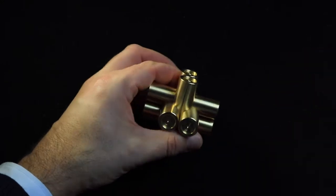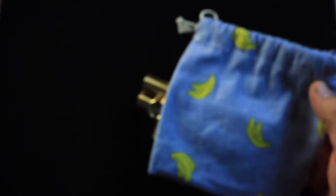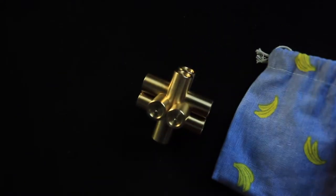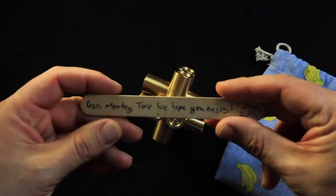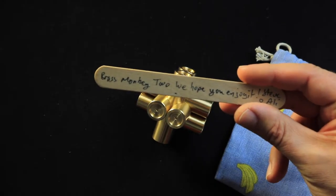The puzzle was delivered in a bag with printed bananas on it. And additionally there was a wooden stick with a short handwritten message on it: Two Brass Monkey, we hope you enjoy it, Ali and Steve.